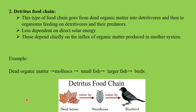The next type of food chain is the detritus food chain. Now, detritus — do you know what it is? That is the dead decaying matter — all dead organic matter is called detritus. This type of food chain goes from dead organic matter into the detrivores. Remember, where the grazing food chain starts with green plants, the detritus food chain starts with detritus, that is dead organic matter, which is then consumed.